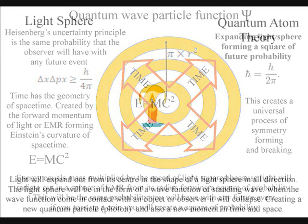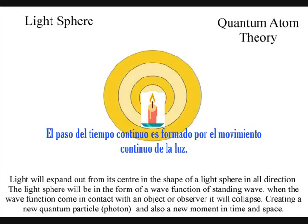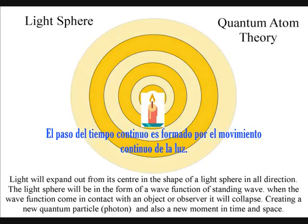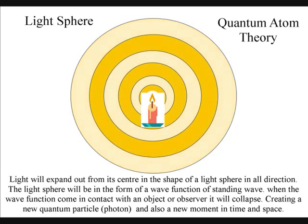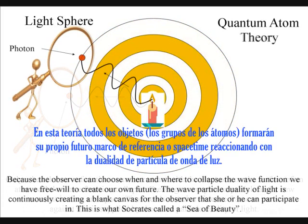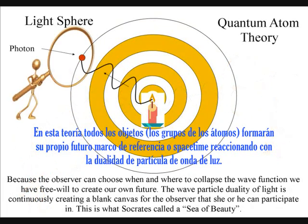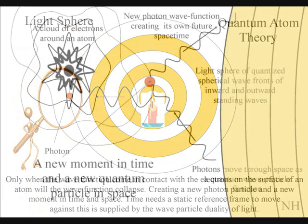We live in a dynamically evolving universe of continuous change because of the probabilistic nature of the wave-particle duality of light. Only if light waves come in contact with an object will they form new photons of quantized energy that will have a unique position in space and time.